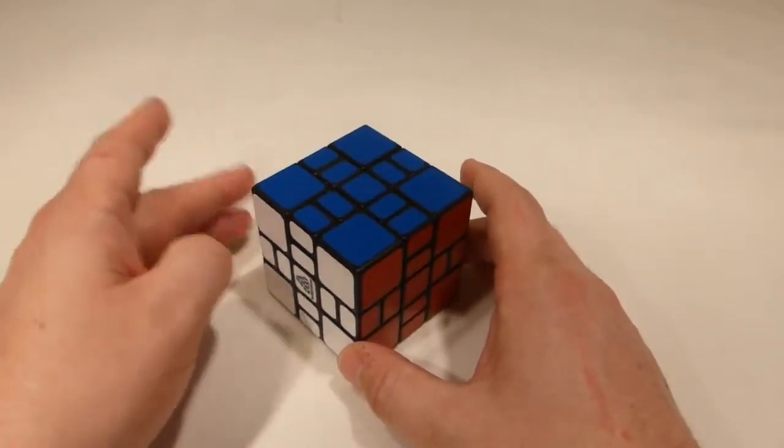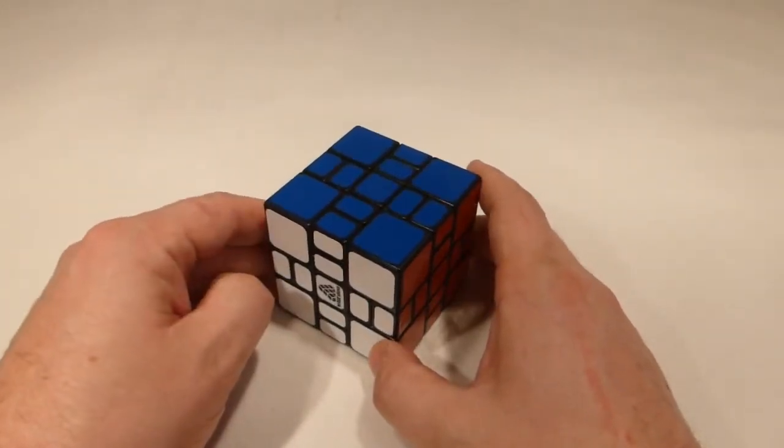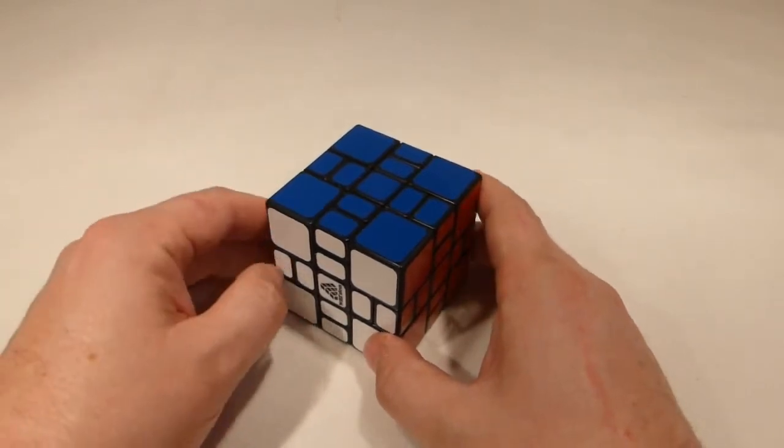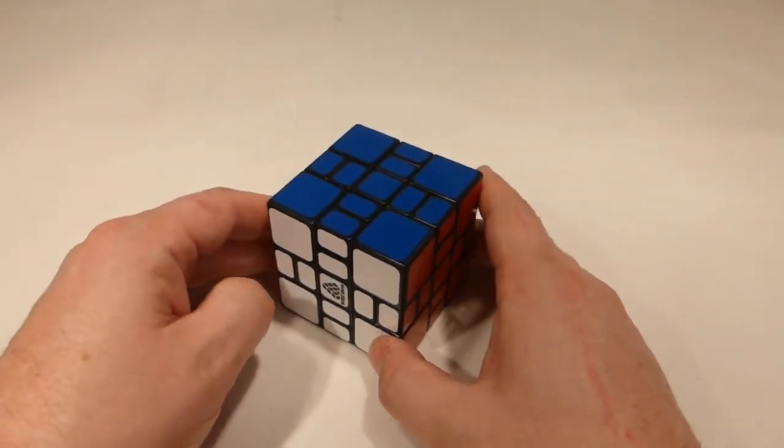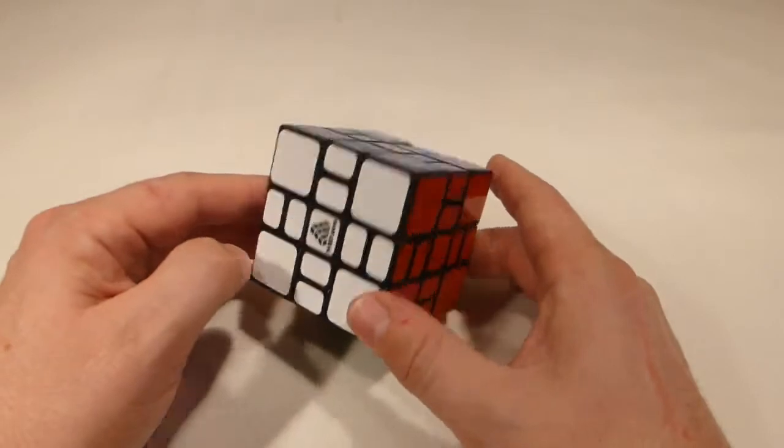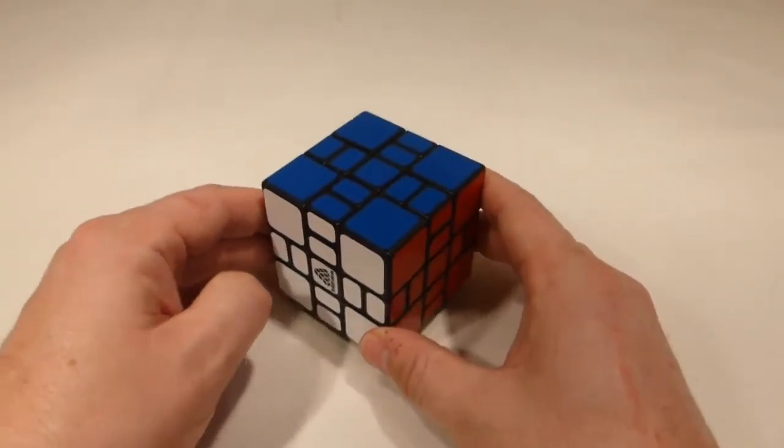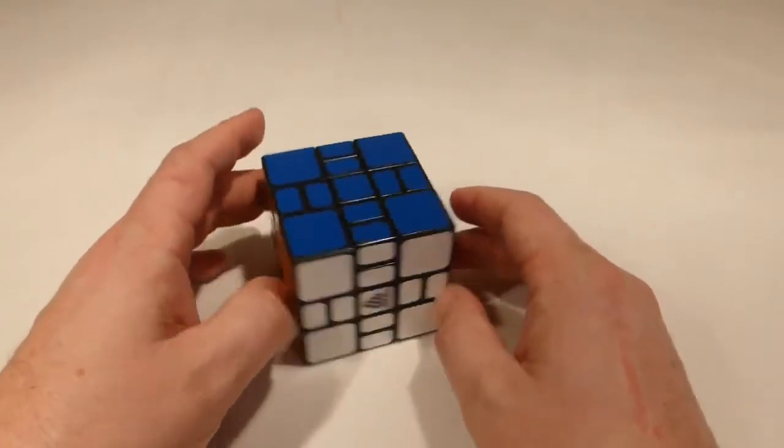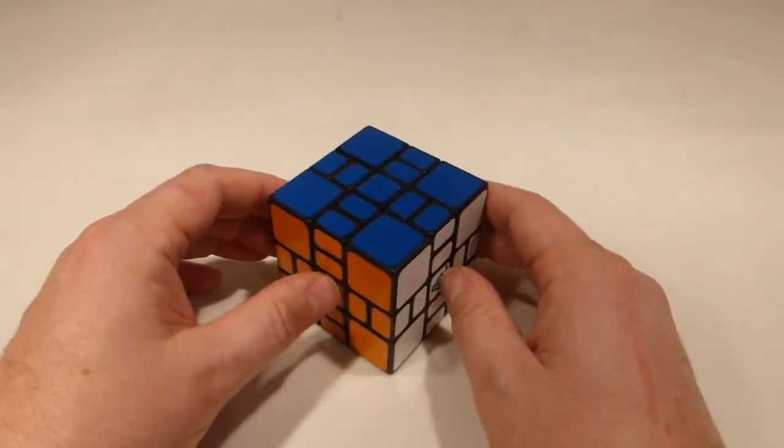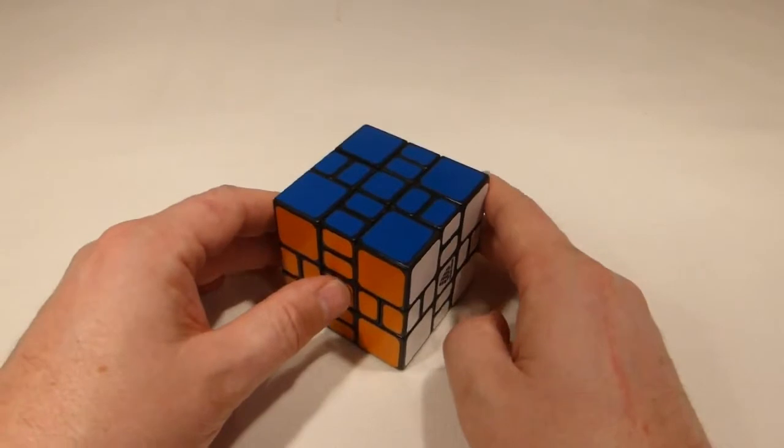He called it the Makarov puzzle or the hedgehog cube. In 2009, Oscar van de Venter made a Shapeways version—he had no idea that Mr. Makarov's version existed. Then in 2013, Witeden ended up mass-producing the mix-up cube.